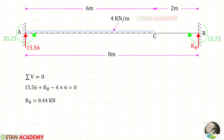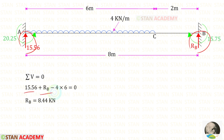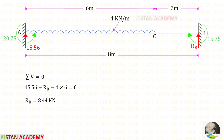Using the equilibrium condition ΣV = 0, we can find RB. RA and RB act upwards, so both are positive. The uniformly distributed load acts downwards and spans 6 meters, so it is negative. Solving, RB = 8.44 kilo Newton.